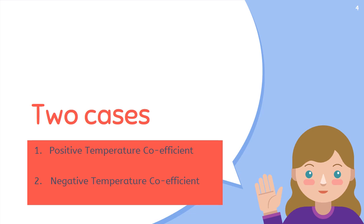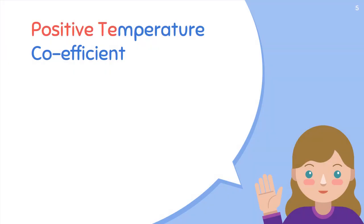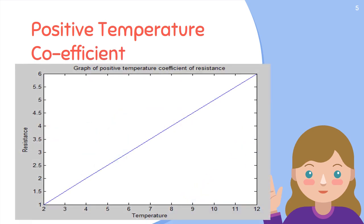Positive temperature coefficient is the one in which resistance increases with increasing temperature. In this graph, by increasing temperature, resistance is increasing linearly, which is mostly the case in conductors and metals.